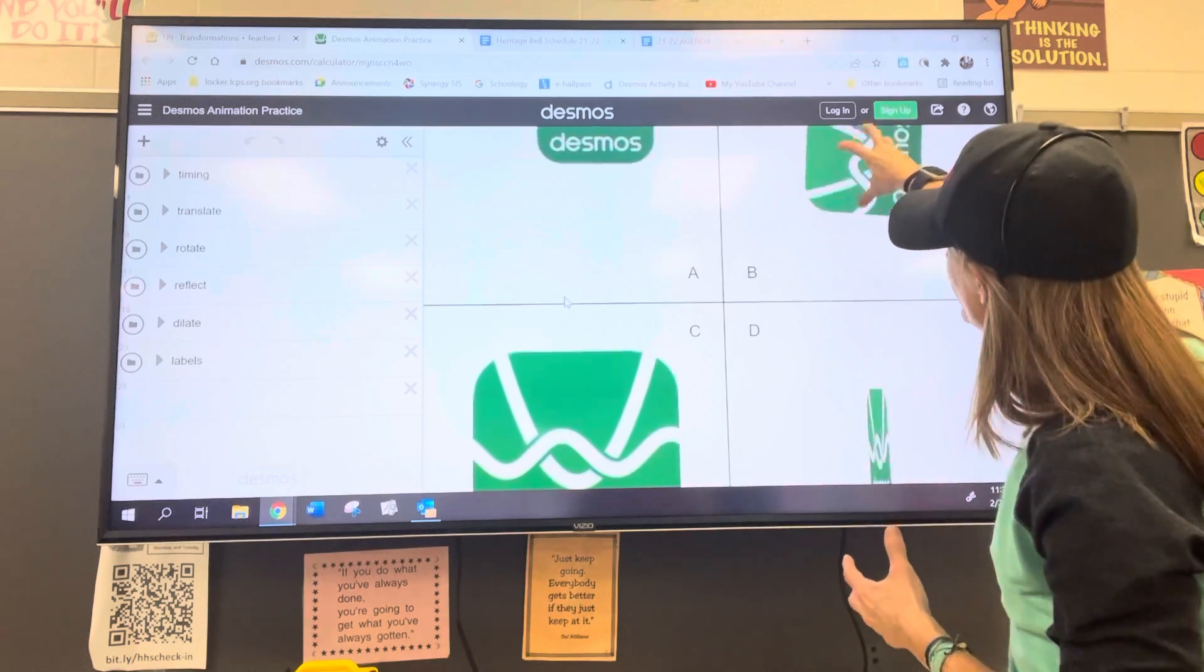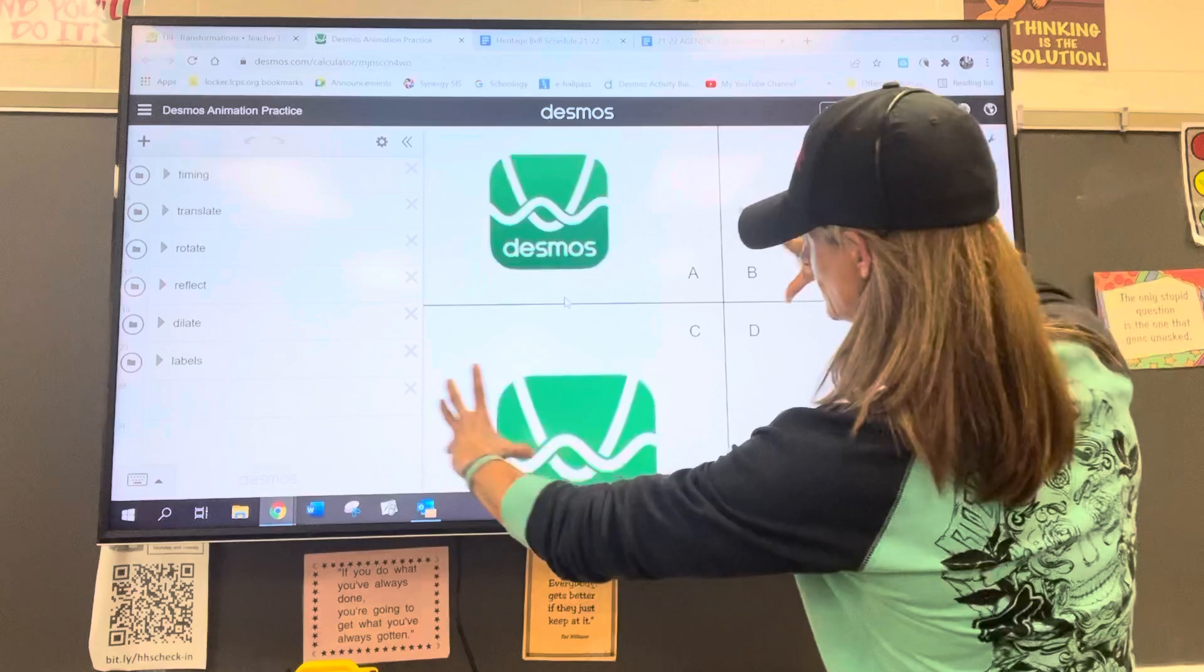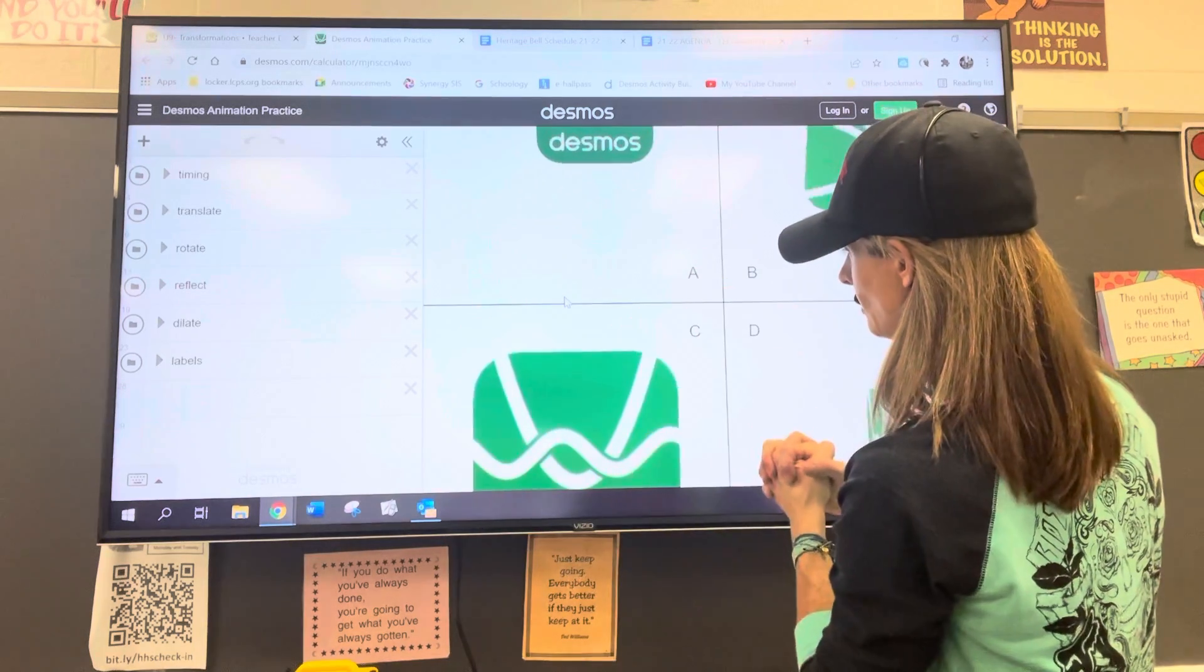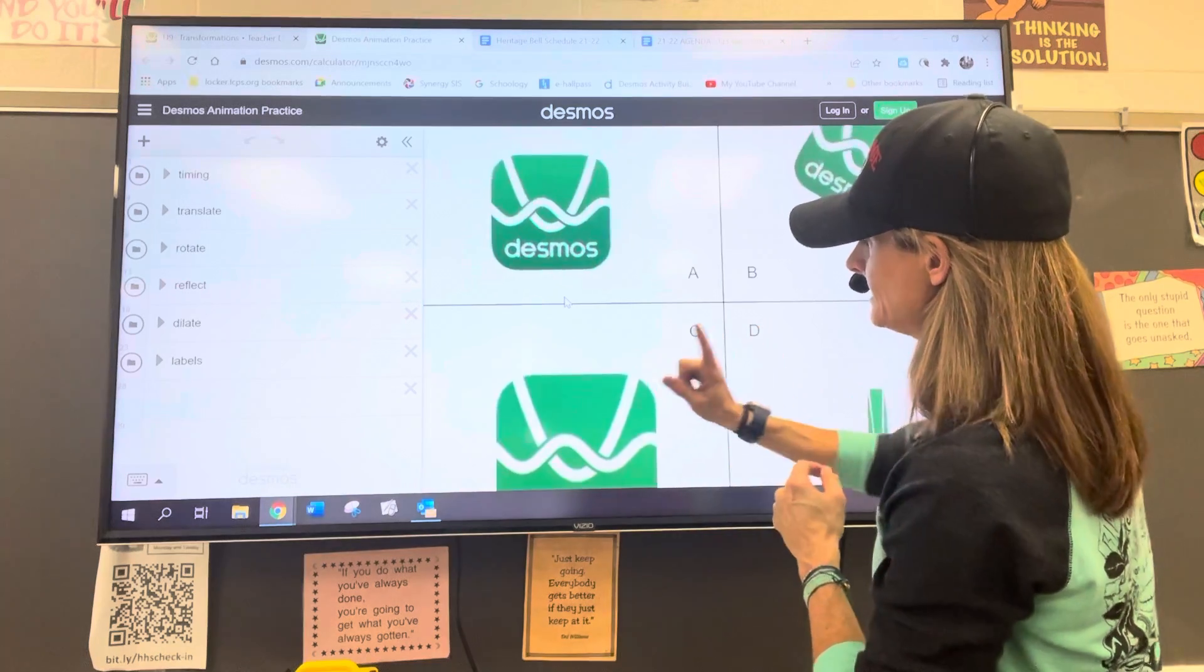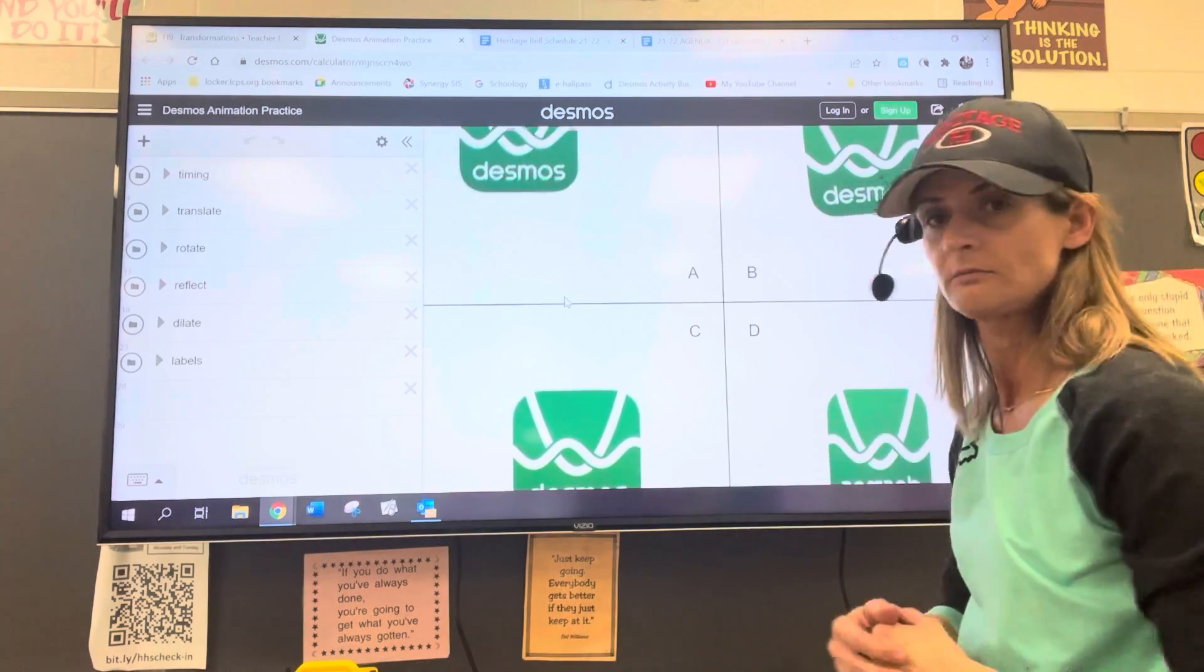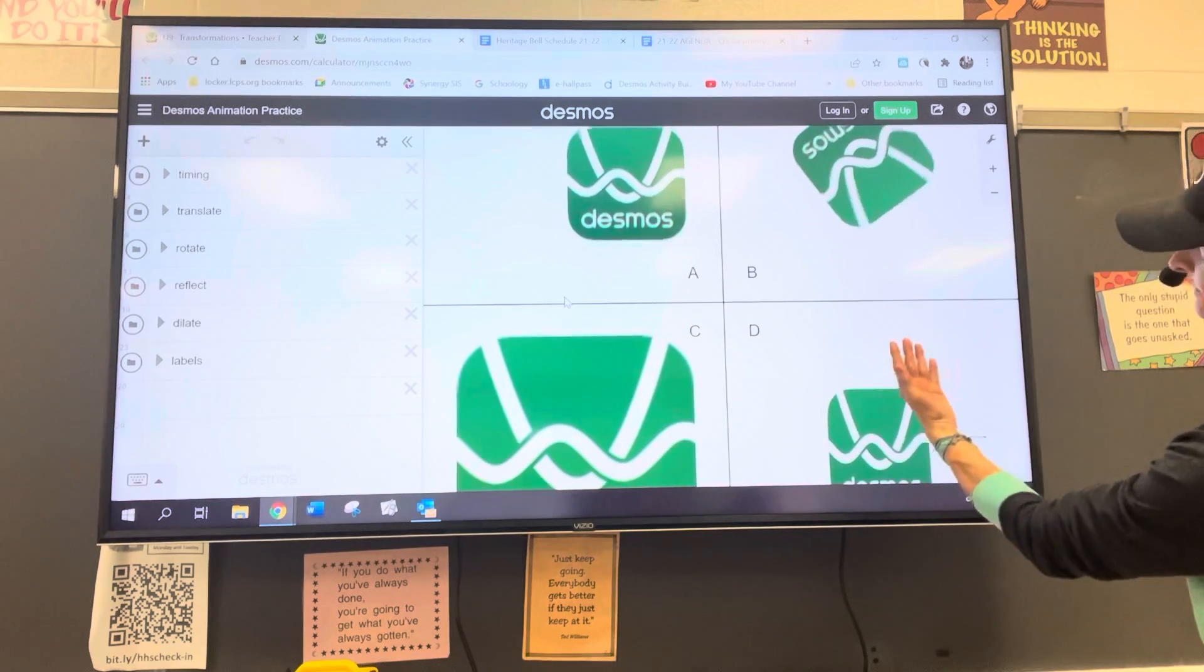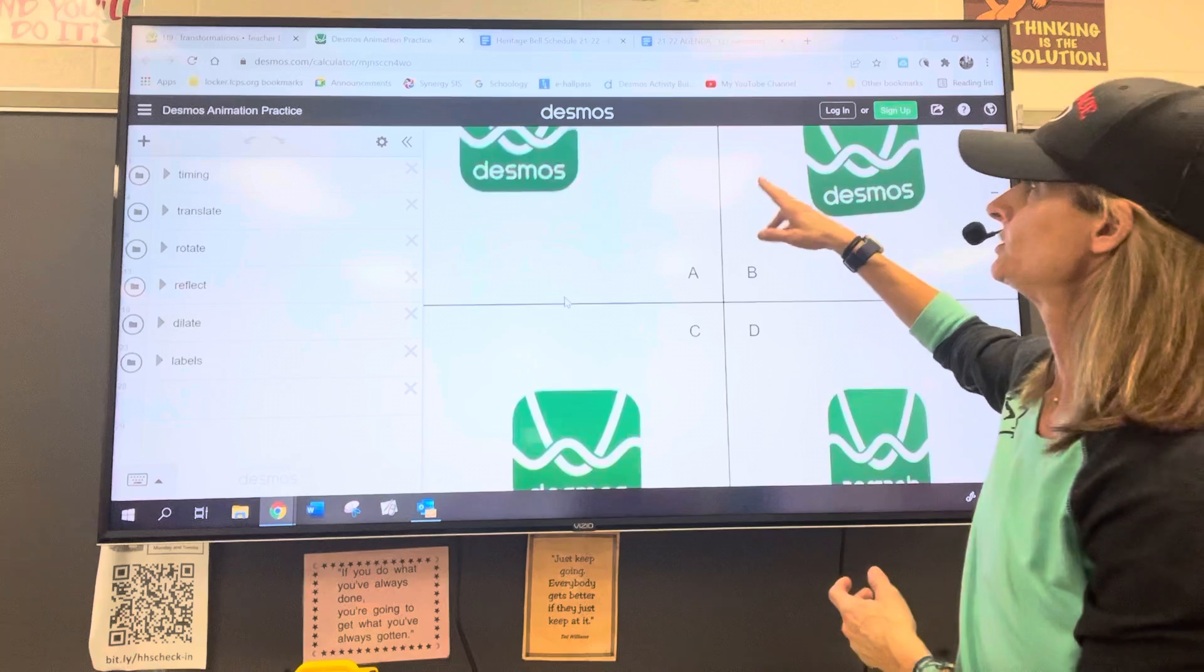This one is a rotation. This one is getting bigger and smaller, but those are similar figures because they are the same shape but different sizes. That is a dilation. And then this one here is flipping—that's a reflection. So those are the four types of transformations, and today we are going to look at translations.